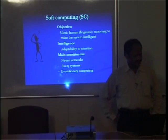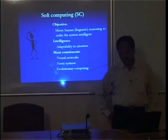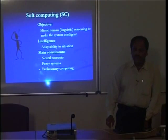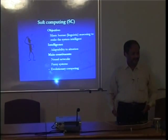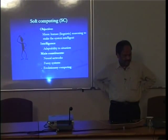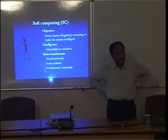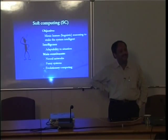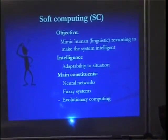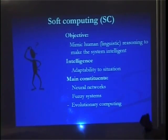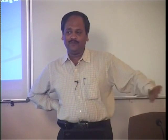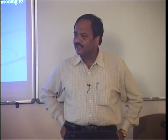Why are we going for that? That is because we want to incorporate intelligence into the computer system. Now, I will ask you, what do you mean by intelligence? We all say that human beings are intelligent. Why? What is the difference that exists between a human being and other creatures — for example, an animal — so that we classify humans as intelligent and others as less intelligent?